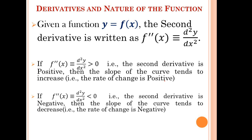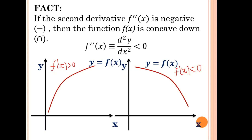If f double prime x or d²y/dx² is less than zero — that is, the second derivative is negative — then after differentiating, if the second derivative is negative (negative one, negative two, etc.), the slope of the curve tends to decrease, meaning the rate of change is negative. If f double prime x is negative, then f(x) is concave down. In the first diagram, the first derivative is greater than zero so the curve is increasing, but since the second derivative is less than zero, it is increasing at a decreasing rate. In the second diagram, the first derivative is less than zero and the second derivative is also less than zero, so the curve is falling at a decreasing rate.